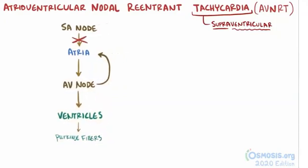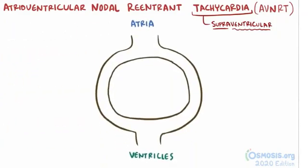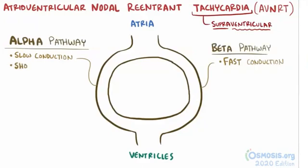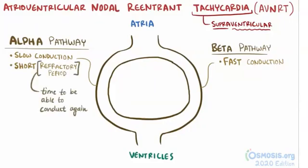Specifically, there are two separate electrical pathways that make up this loop. One of these pathways has heart tissue that has slow electrical conduction, and is called the alpha pathway, and the other has fast conduction and is called the beta pathway. The alpha pathway has a short refractory period, which is the time it takes to be able to conduct another signal. The beta pathway, on the other hand, has a long refractory period. Once you have all those things, you've got yourself a recipe for AVNRT.